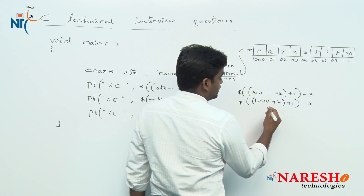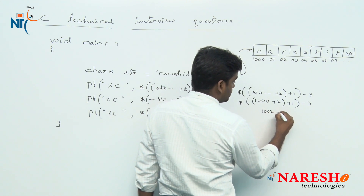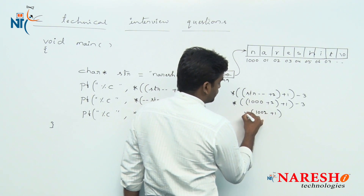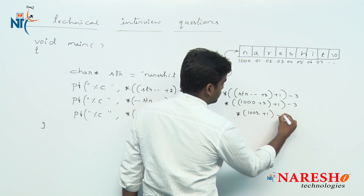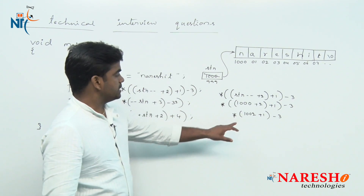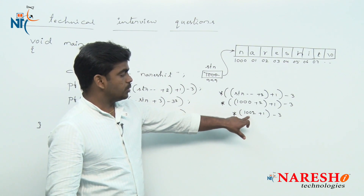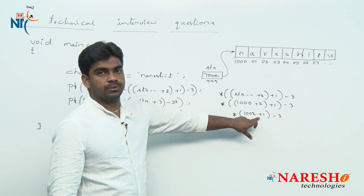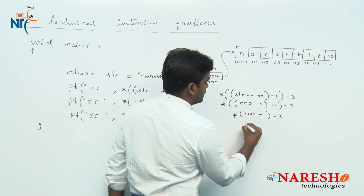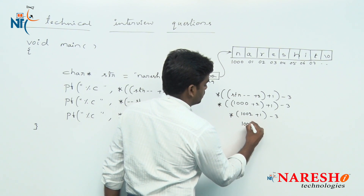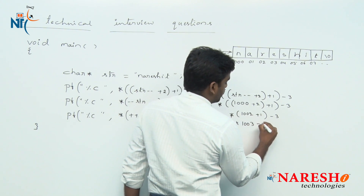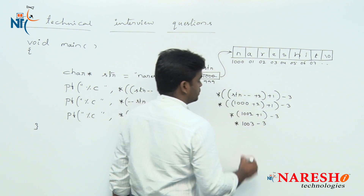That gives us 1002. Then 1002 plus 1 — increased by 1 — equals 1003, with pointer minus 3 remaining.